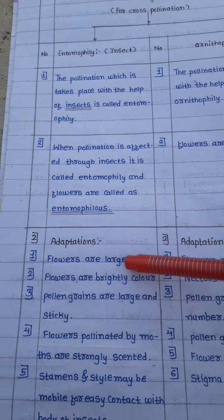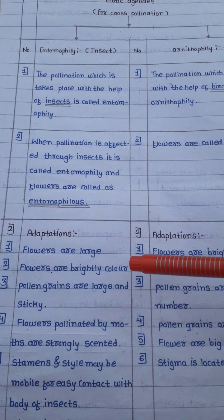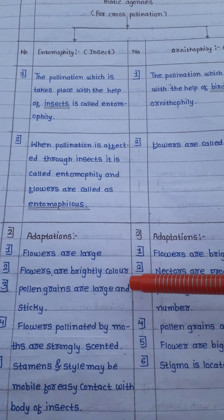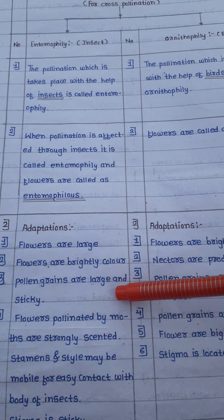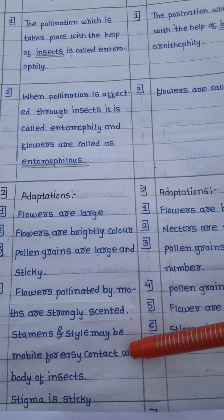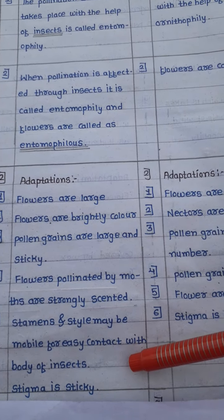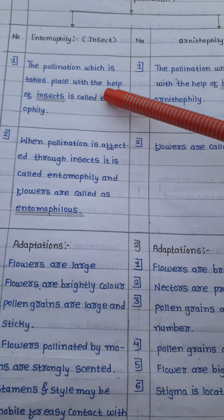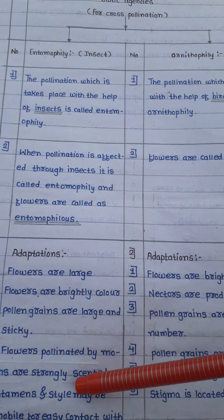These flowers show some adaptations. These flowers are large and mostly brightly colored with attractive color. Pollen grains are large and sticky. Flowers pollinated by moths are strongly scented. Stamen and style may be mobile for easy contact with the body of the insect, and stigma is sticky.